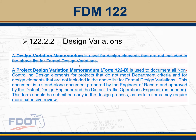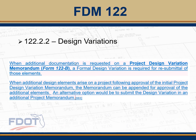In those cases you'll prepare this multi-page document that will list each item, and it's ideal to include a paragraph or so covering the items we'll discuss shortly. One note on these design variation memorandums: there is a checkbox on Form 122B where, when the district design engineer or another person in the chain of approval requests more information, a formal design variation is required for the resubmittal of those particular elements, so they would not be included in the memo in any resubmittals.